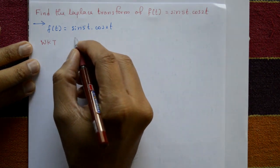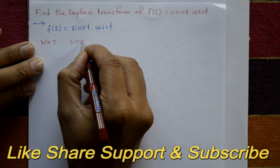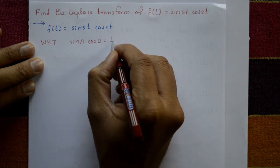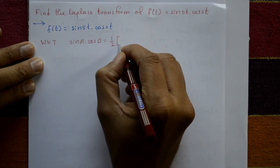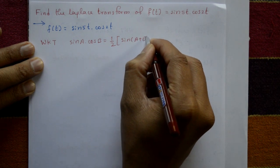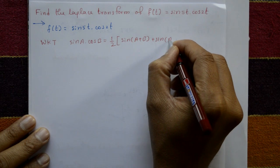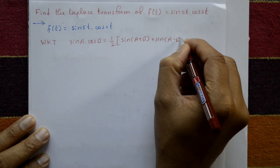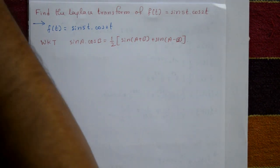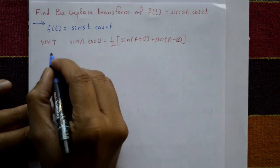We know the standard formula: sin(a)·cos(b) = (1/2)[sin(a+b) + sin(a-b)]. This standard formula converts a product into a sum. Here a = 5t and b = 2t.